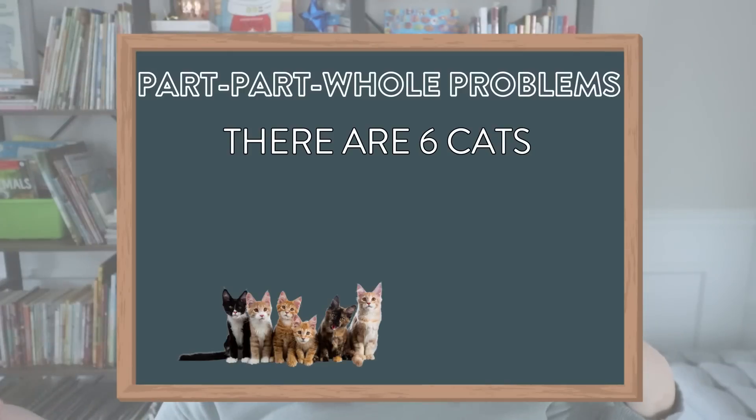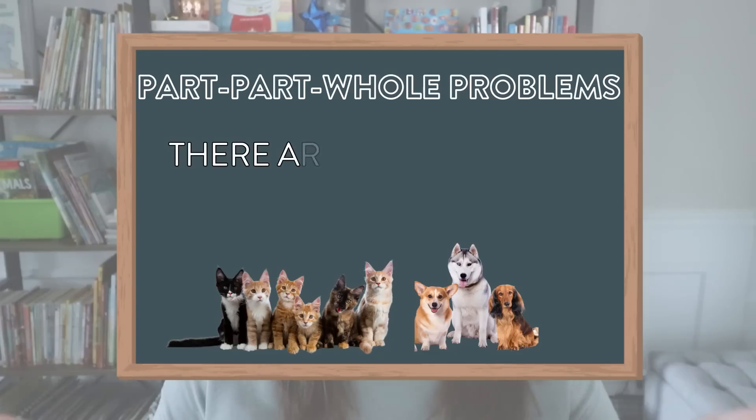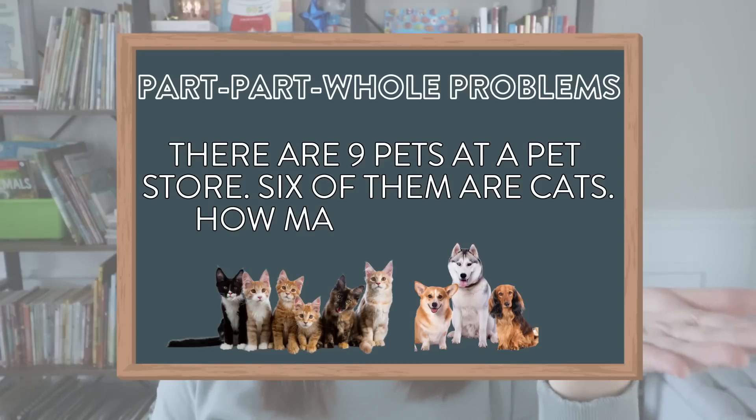The second type of word problem we often see is a part-part-whole problem. Unlike join and separate problems, there are no action verbs — instead, we're looking at different parts of a whole and their relationship. For example, there are six cats and three dogs at a pet shop; how many pets are there in all? Nothing was added on, nobody came — we're just looking at what the whole is. The other variant is when one part is missing: there are nine pets at a pet store, six of them are cats, how many are dogs? Students are thinking about the relationship between the parts and the whole.